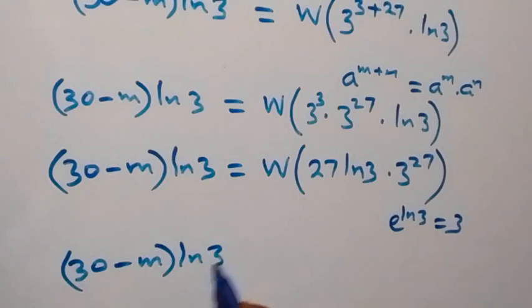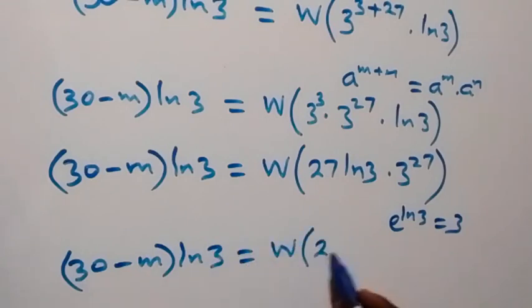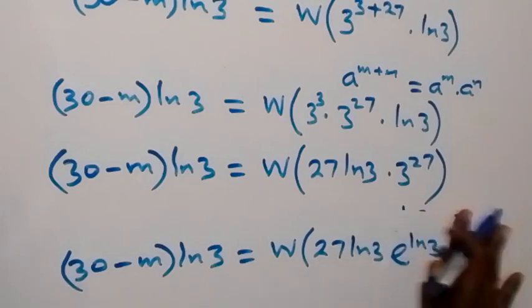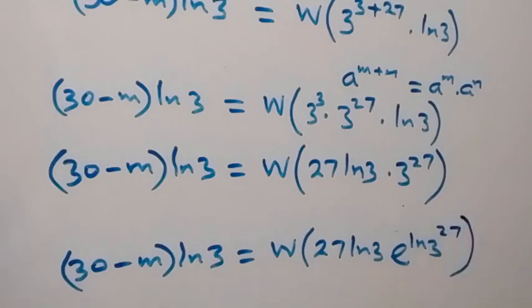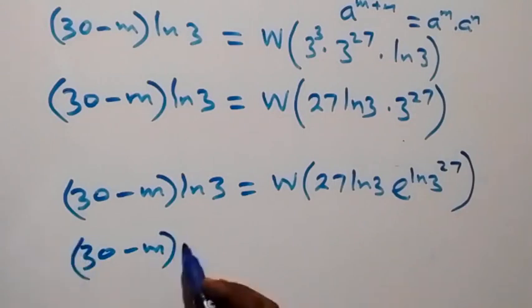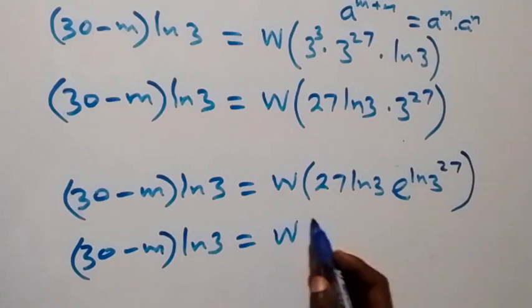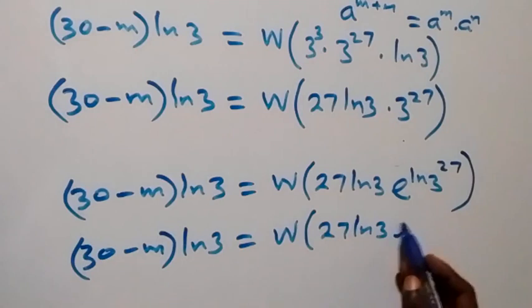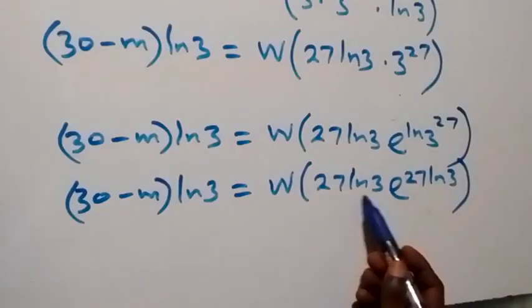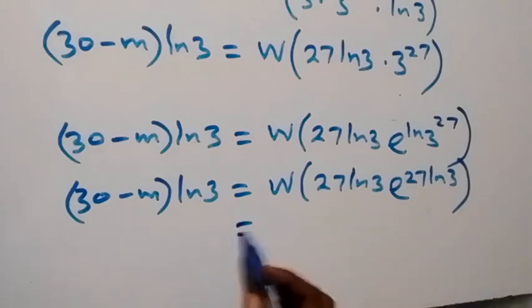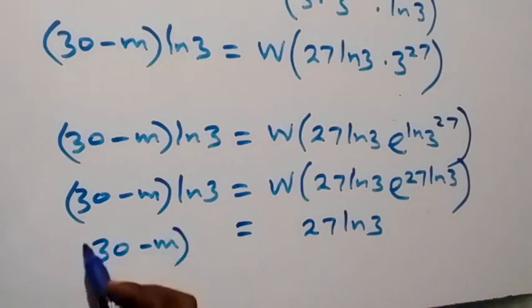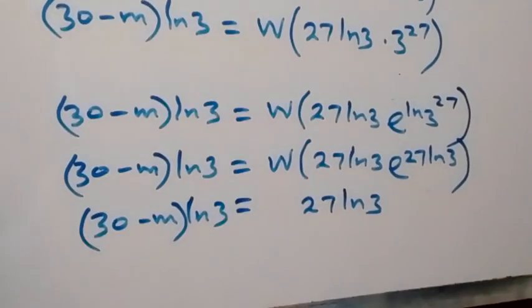This gives us W of 27 ln 3 times e raised to power 27 ln 3. Applying the power law, this becomes W of 27 ln 3 times e raised to power 27 ln 3. Since the power and coefficient are already the same, the W function reduces to 27 ln 3, which equals 30 minus m times ln 3.